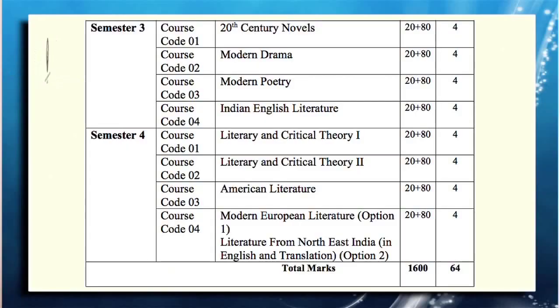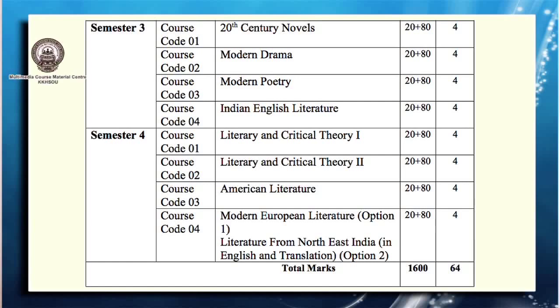In semester three, we have four different papers: 20th Century Novels, Modern Drama, Modern Poetry, and Indian English Literature. In semester four, which is also the last semester of the MA English program, we shall be studying with an optional paper in the fifth.